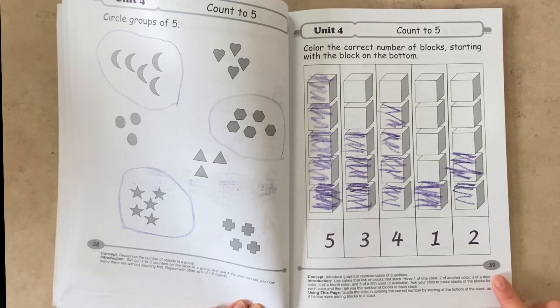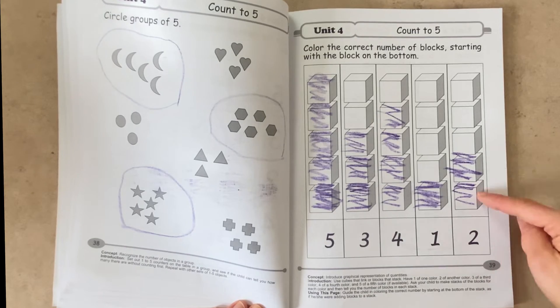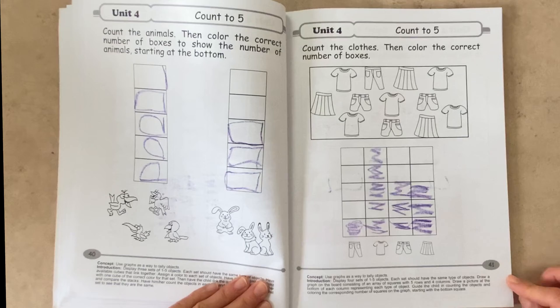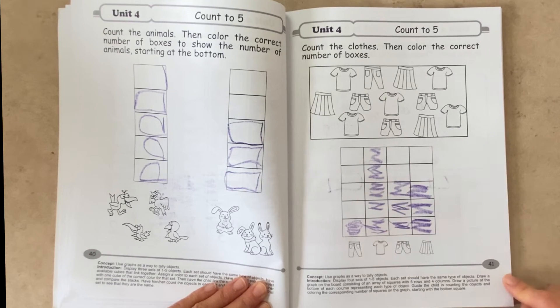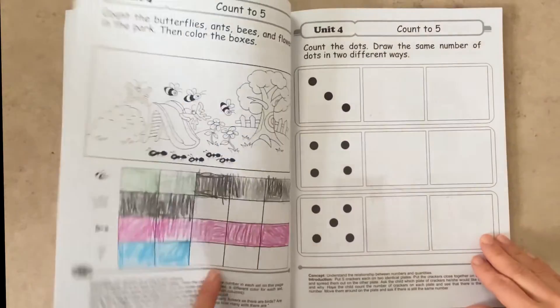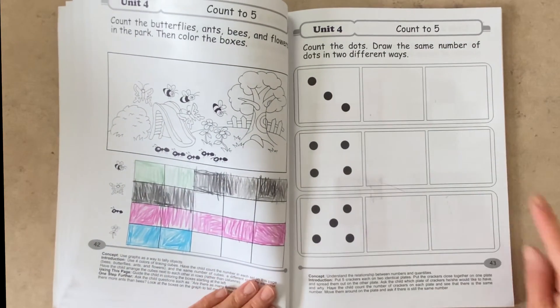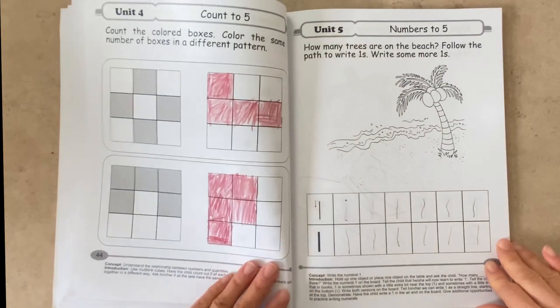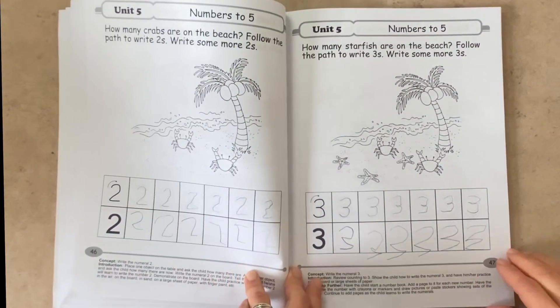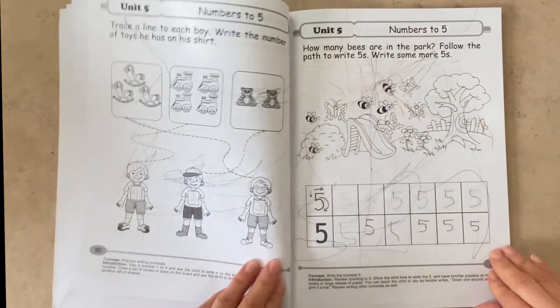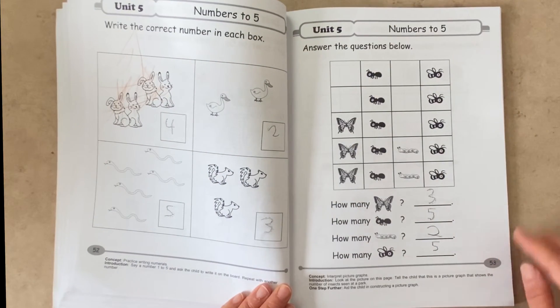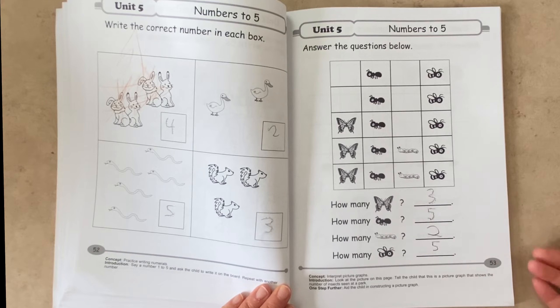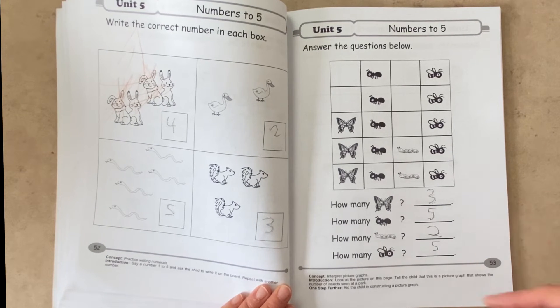And on page 39, the student is introduced to counter blocks. And here we're getting introduced to bar graphs. And on page 43, we get to be exposed to dice. And page 53 is basically getting a chance to practice reading charts. And I feel like this is a great skill to start learning as an elementary kindergartener.